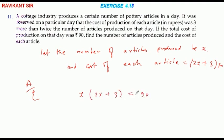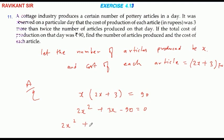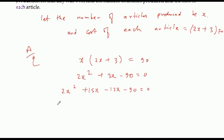The total cost — factor करते हैं 2x² और यहां पर हम लोग कर लेते हैं plus 15x और minus 12x - 90 equal to 0। अब यहां पर common हो जाएगा इन दोनों में से x, तो यहां आ जाएगा 2x plus 15।